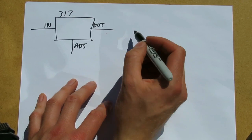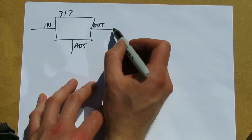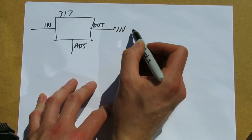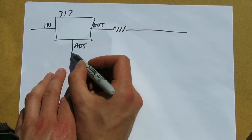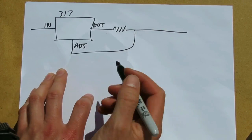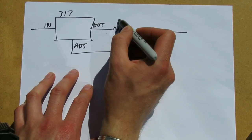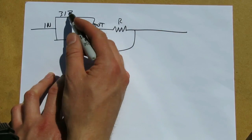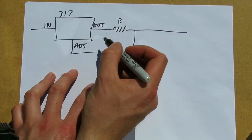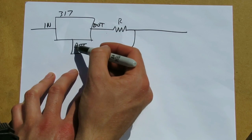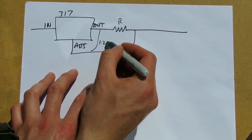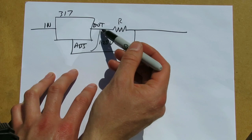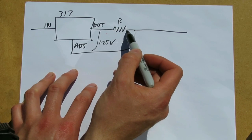This time we put a resistor in series with the output and we connect the adjustment terminal to there. If that's R, again, the 317 will adjust its output until the voltage between the adjustment terminal and the output is 1.25 volts.